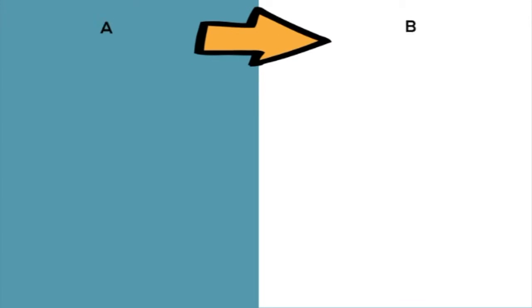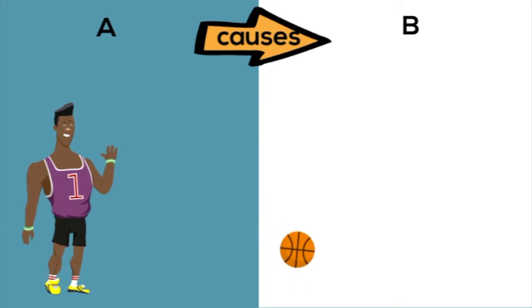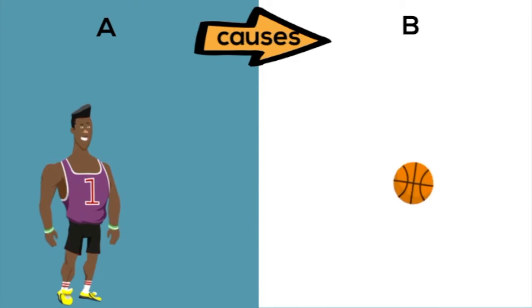We learn that A causes B through repetition and consistency. We know that when Stefan here spikes this basketball against the ground, it's going to bounce. And we know this because we have direct experience bouncing basketballs and we've seen it done by many other people with the same results.